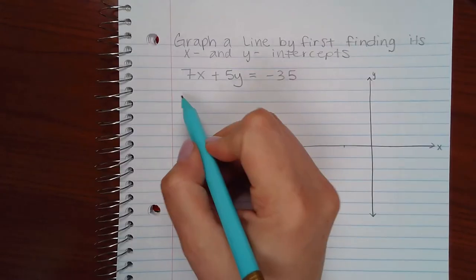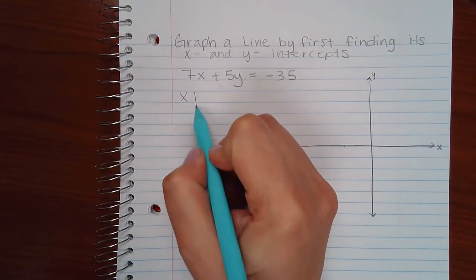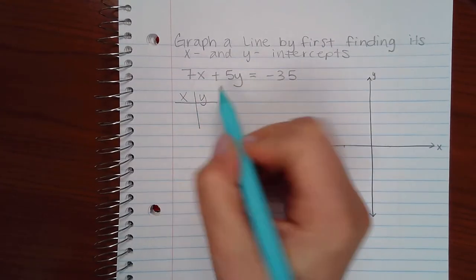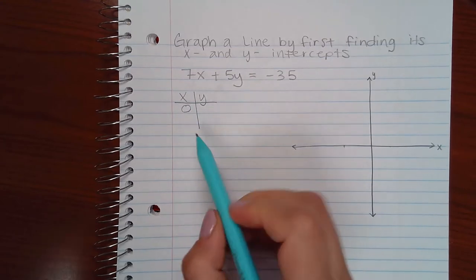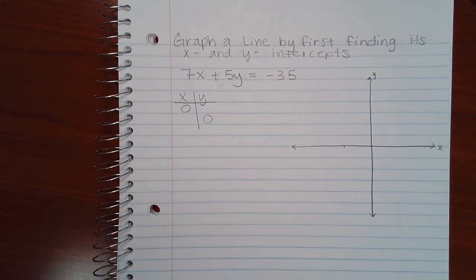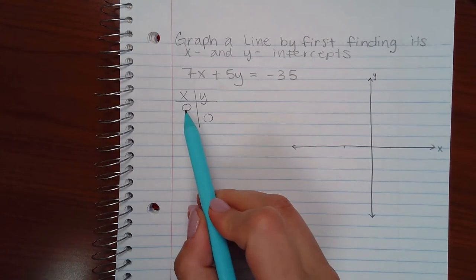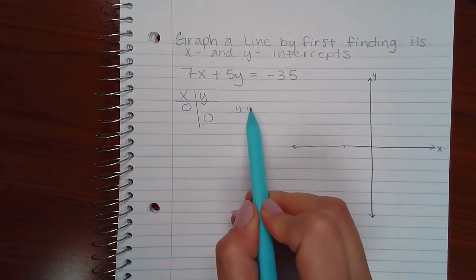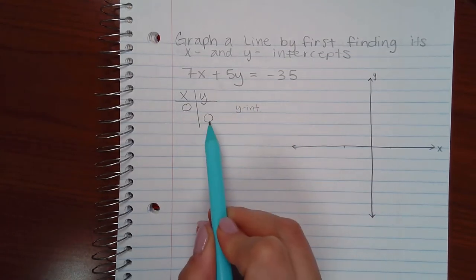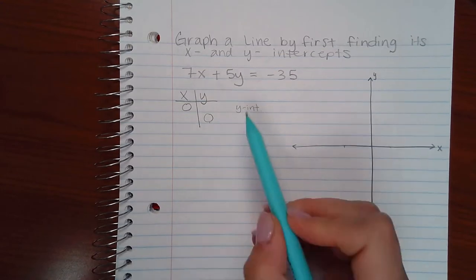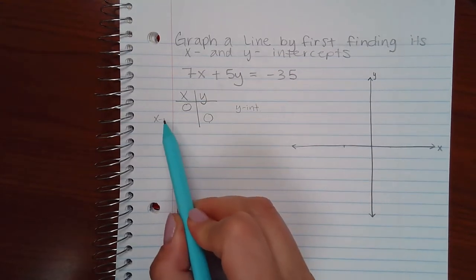Due to that, the easiest way to find the intercepts is just to plug in zero for x and zero for y. By plugging in zero for x you're finding the y-intercept and by plugging in zero for y, finding the x-intercept.